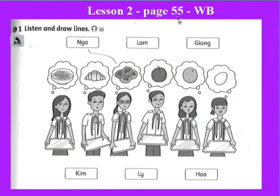Page 55. Exercise one: Listen and draw lines. In this exercise, you will have a listening task. You will listen and identify the names of the friends in the picture. Now listen carefully and connect the name to each person, each student in the picture.